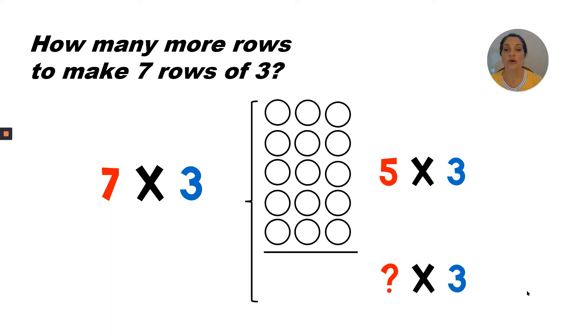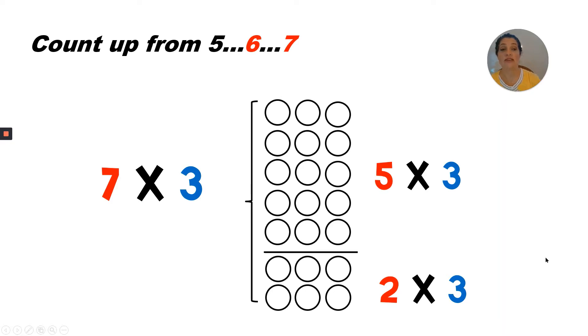How many more rows to make seven rows of three? So we have one, two, three, four, five. Five rows of three. And the unknown is how many more rows of three we need to get to seven rows of three. Let's count up from five. Six, seven. That's right. We need two more rows of three.